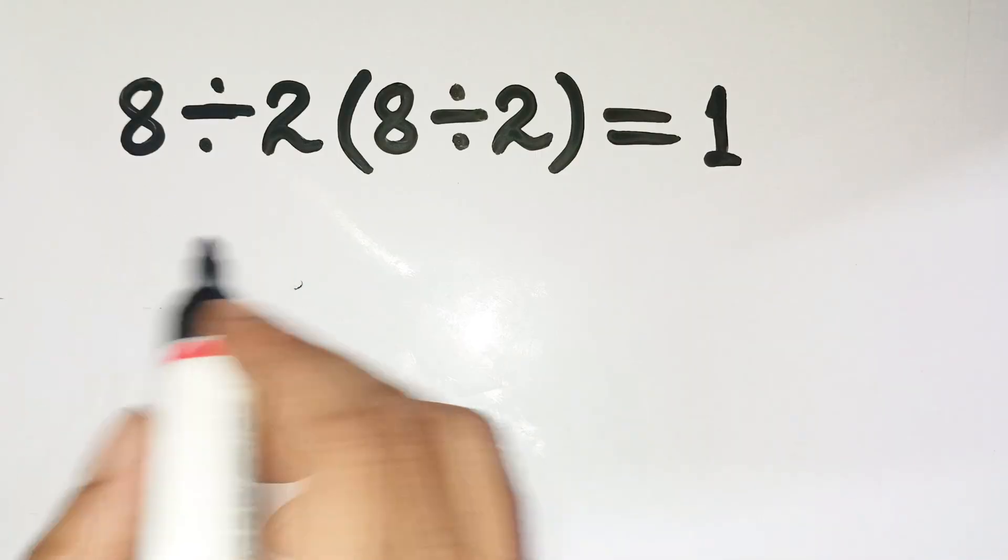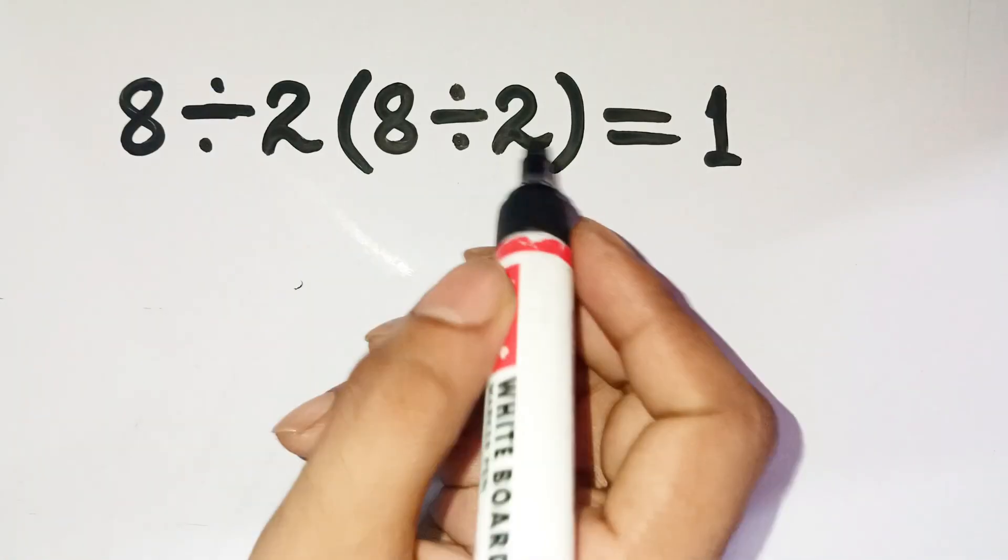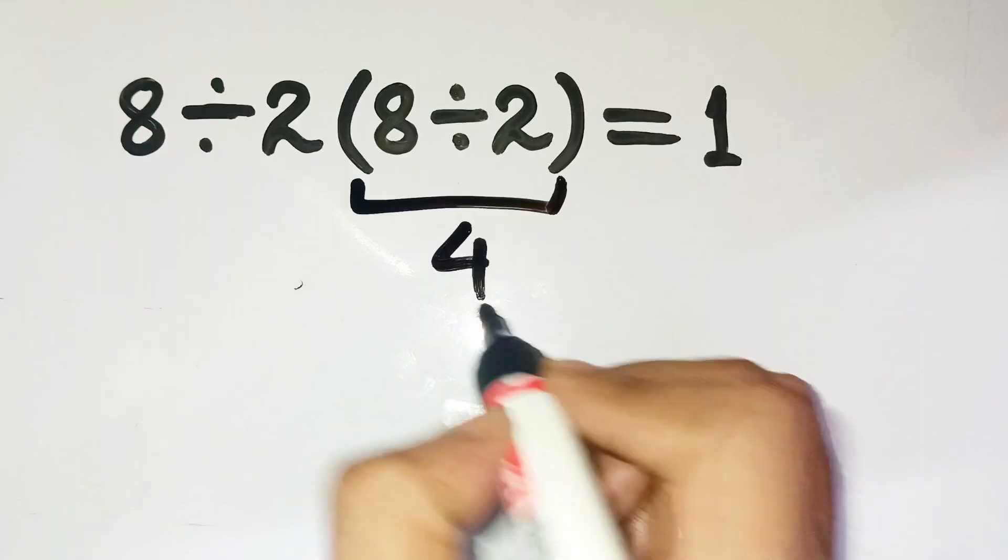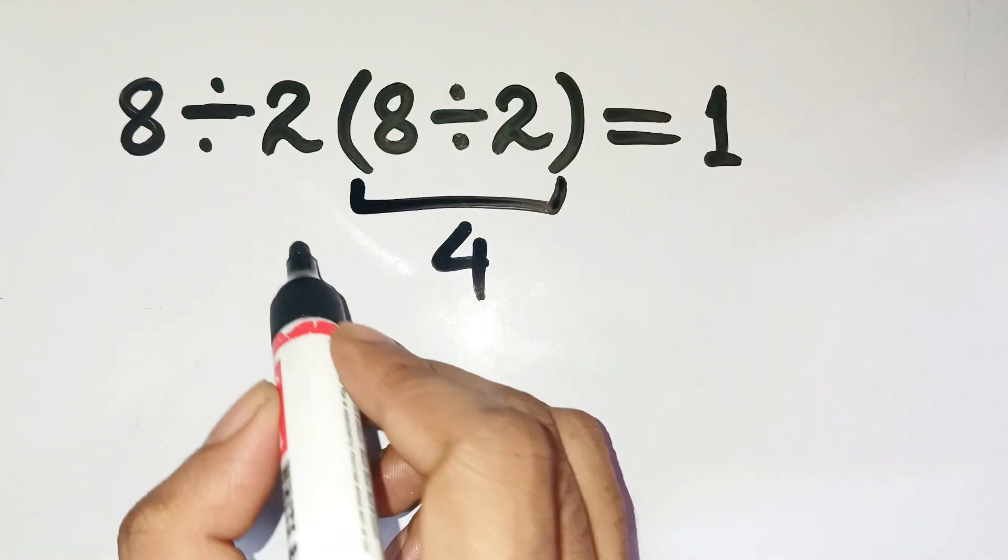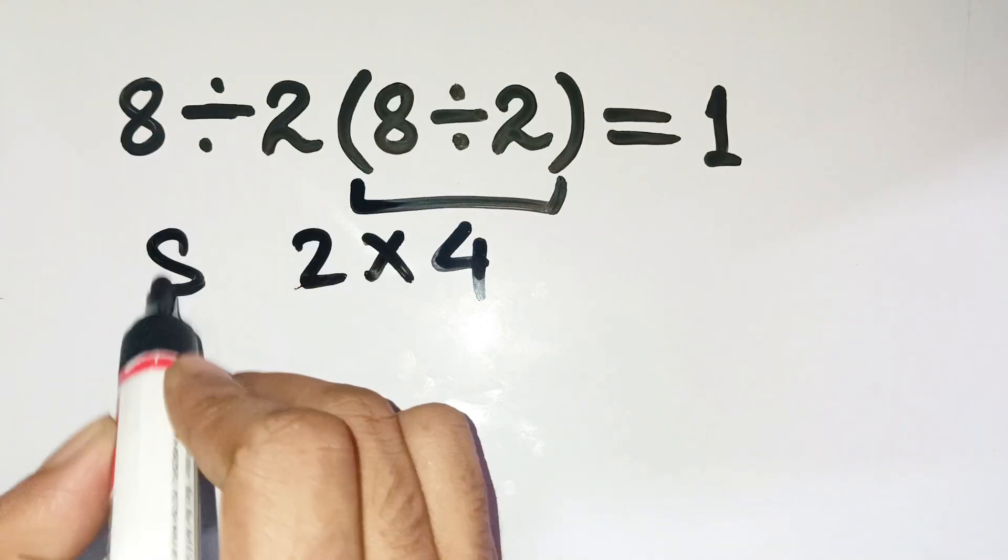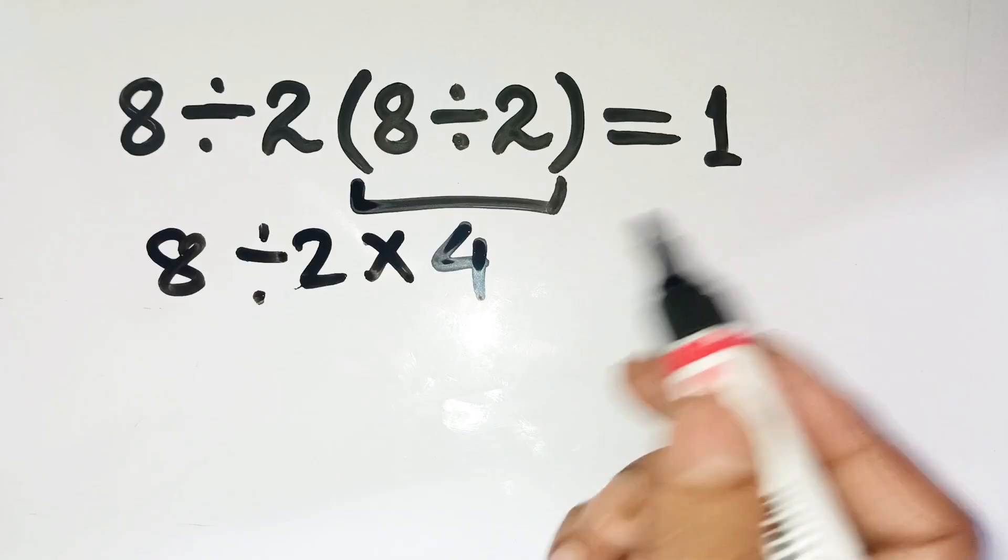You look at it and think, okay, inside the parentheses, 8 divided by 2 is 4. Then I multiply that by 2 outside, and 8 divided by 8 gives me 1. Boom. Done.